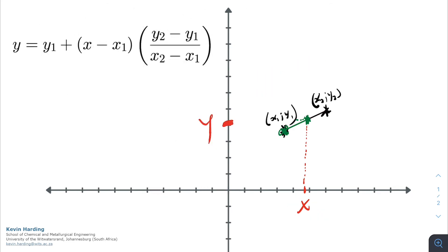Rearranging that and putting the y on the left we will have y is equal to a positive y1, we take it across to the other side, plus x minus x1 multiplied by...